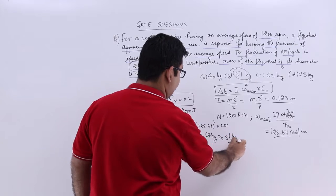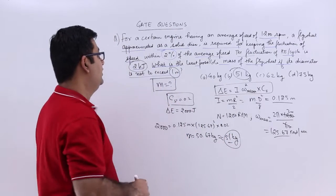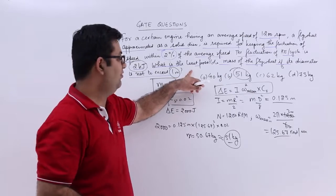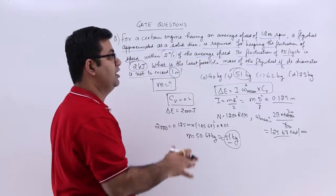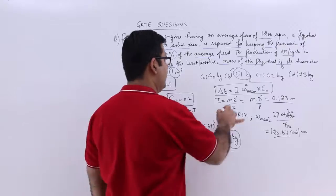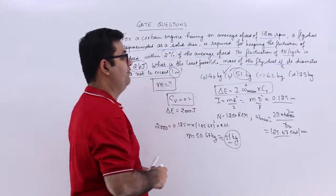So I can say that the least possible mass of the flywheel is 51 kg if this configuration is to be maintained. So the answer is option B which is 51 kg.